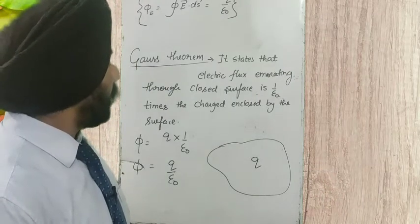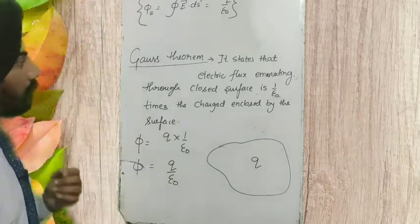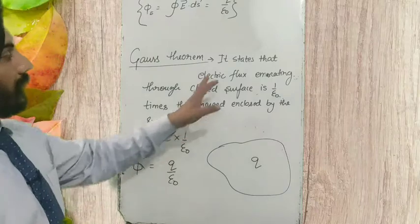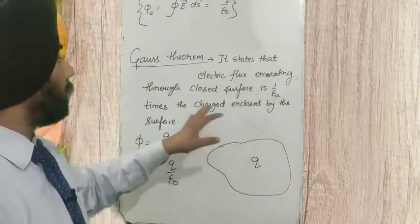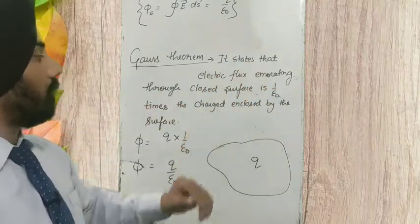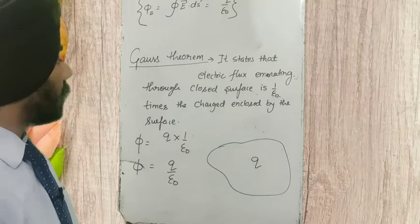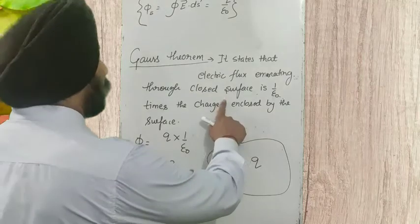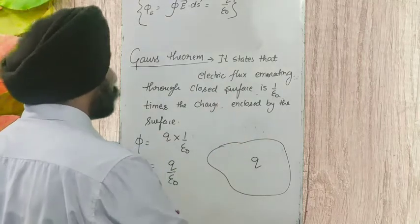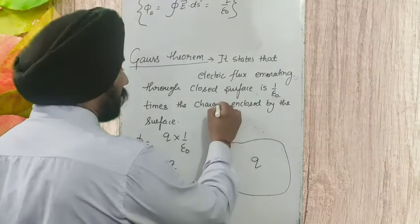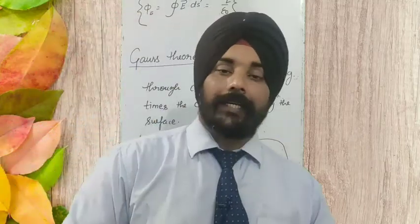Here I have written Gauss theorem. Gauss theorem states that electric flux emanating through a closed surface is 1 upon epsilon naught times the charge enclosed by the surface. So this is the Gauss theorem.